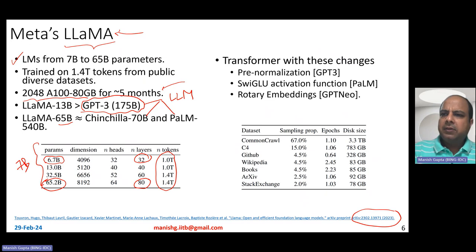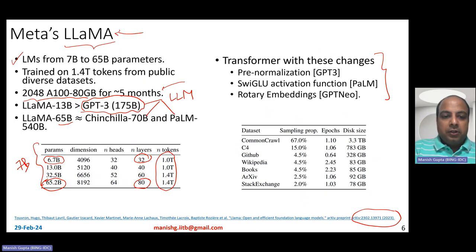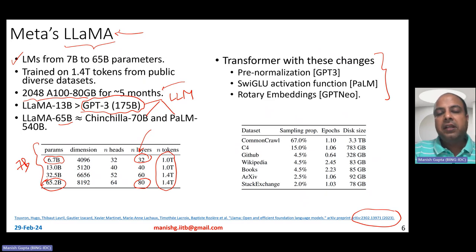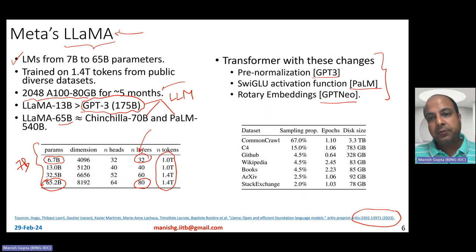From an architecture perspective, LLaMA is basically a transformer decoder with three key changes: pre-normalization, SwiGLU activation function, and rotary position embeddings. These weren't new to LLaMA — pre-normalization was borrowed from GPT-3, SwiGLU from PaLM, and rotary position embeddings from GPT-Neo.